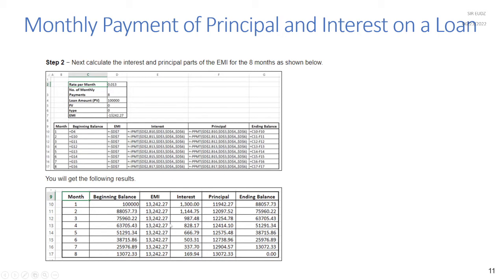The results show that on the first payment of about 13,000, approximately 11,000 goes to principal and 1,300 to interest. On the second payment, 12,097.52 goes to principal with a lower interest portion. As the balance decreases, interest payments decrease and principal payments increase, until the final balance is zero.